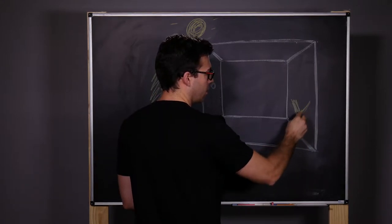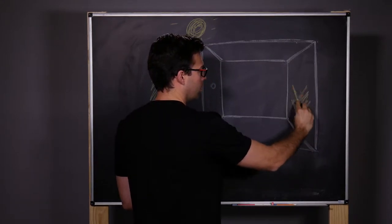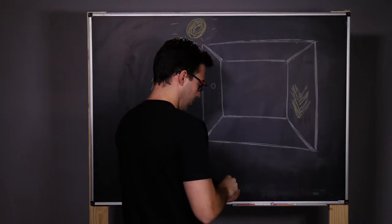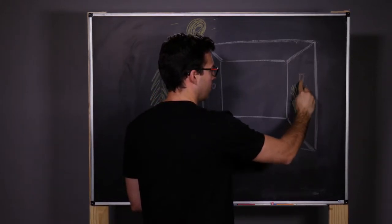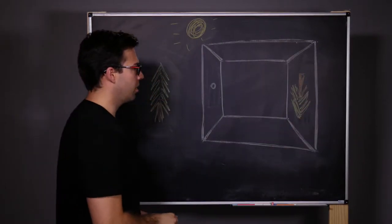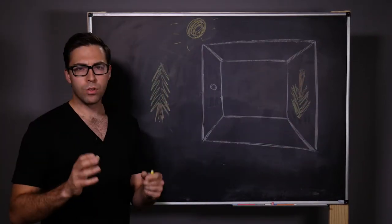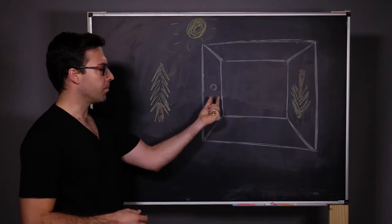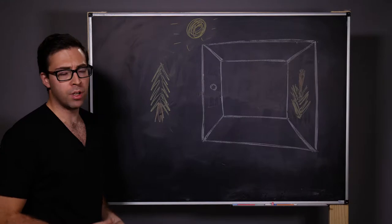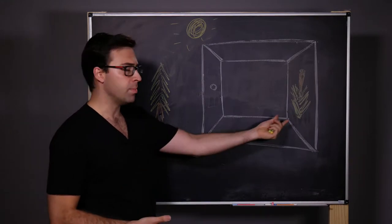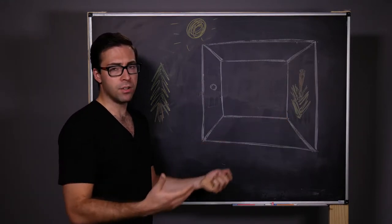So our tree is going to look something like this. Here's the base of our tree. Something like that. So why does this happen? Why, when we have a small opening, does it project an image onto the opposite wall? Whereas before, with the large window, we didn't really see a sharp image. We just saw light enter the room.